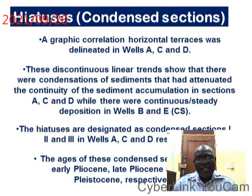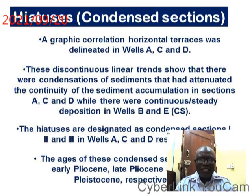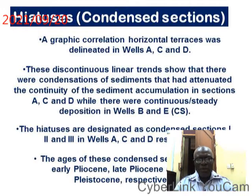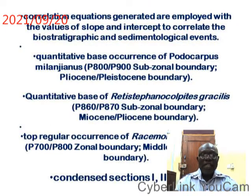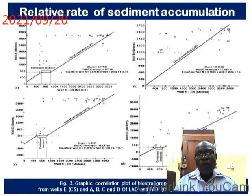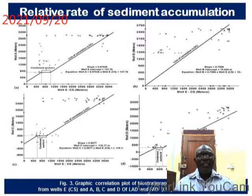The hiatus are designated as condensed sections 1, 2, and 3 in wells A, C, and D respectively. The ages of these condensations are Late Pliocene, Late Pliocene, and Late Pliocene in each of the condensations. The graph also gives us the equation of correlation whereby biostratigraphic events and sedimentological events were correlated at different depths of the wells.